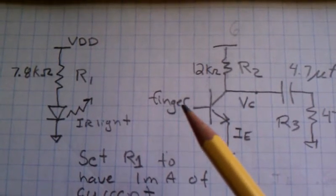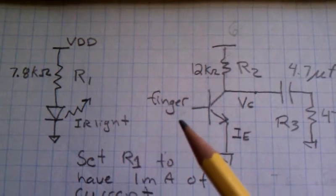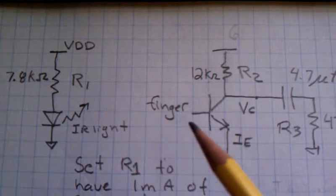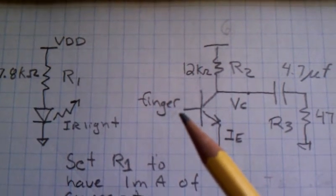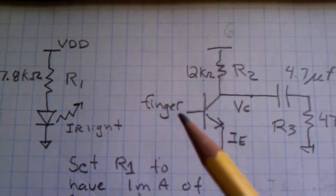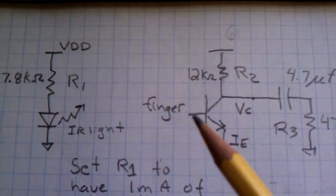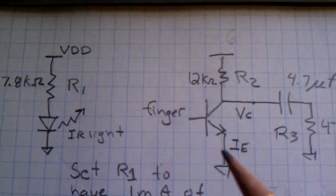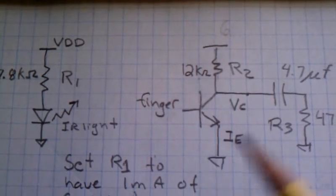Except rather than a biasing network and a voltage input, you put your finger and the light bounces off of your finger. Changes in your finger due to your pulse will modulate the IR light and modulate VBE, which will change the current, which is what we measure.